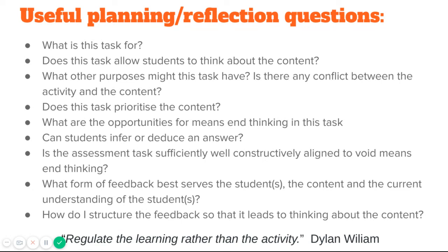We might also need to think about the forms of feedback we give students — whether it's about the content or the processes of working answers out based on their current understanding, and whether we can get them to think about content in a deeper and more meaningful way. The final suggestion is thinking about how we structure re-teaching: do we need to go back to the beginning, as I would with the metal and water example, re-teaching the equation and reminding students they've come across that gas before, before building back up? To summarise, constructive alignment allows us as teachers to regulate the learning rather than the activity.